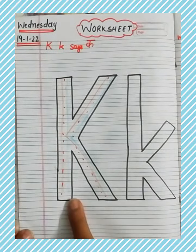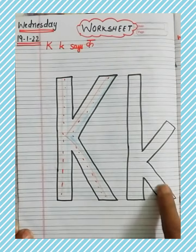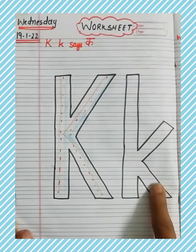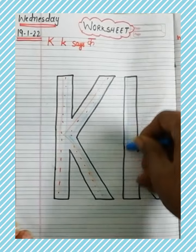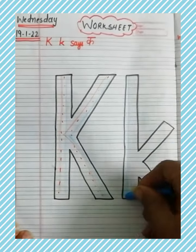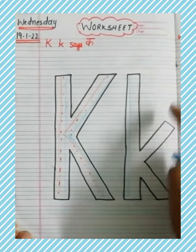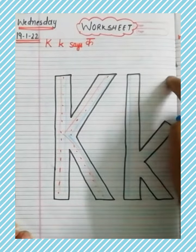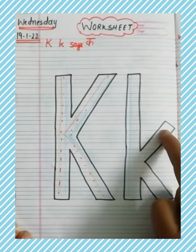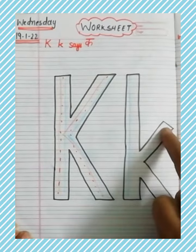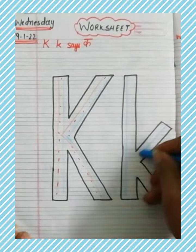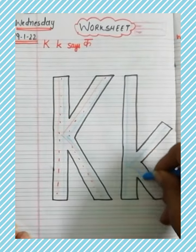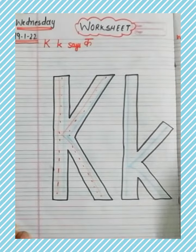ऐसे आपने capital K राइट करना है. अब small K कैसे राइट करेंगे हम? First of all, write the standing line. इसकी जो slant line है वो ऊपर से start नहीं होगी — जो second line है उससे start होगी. Slant line and down slant line.